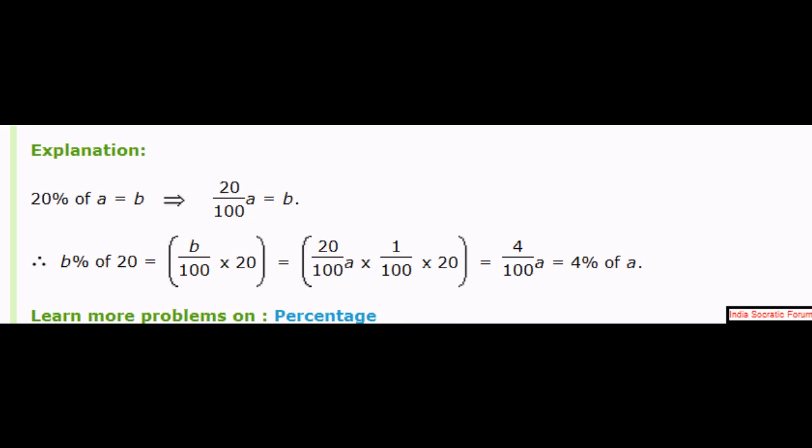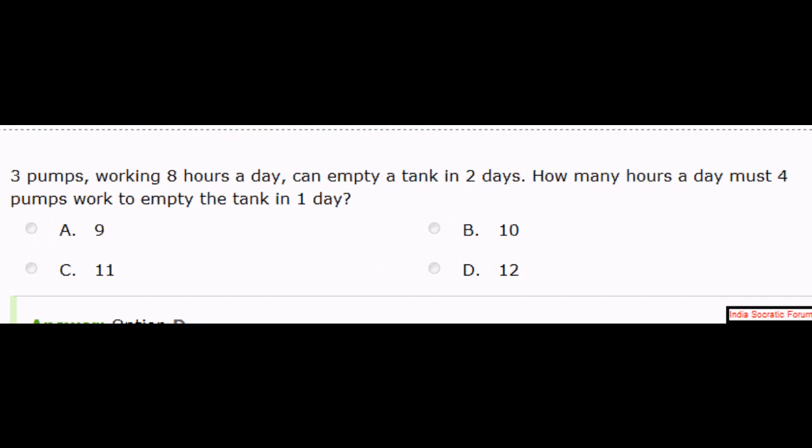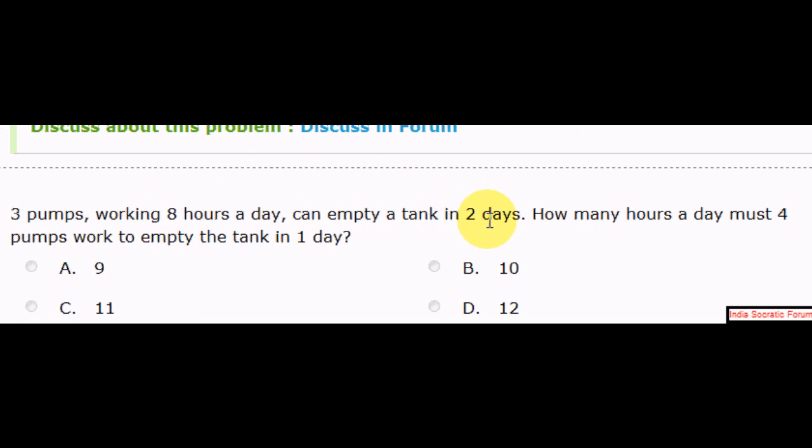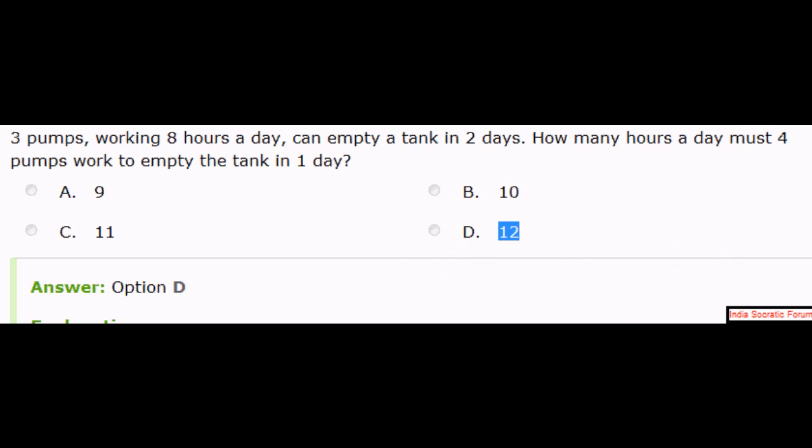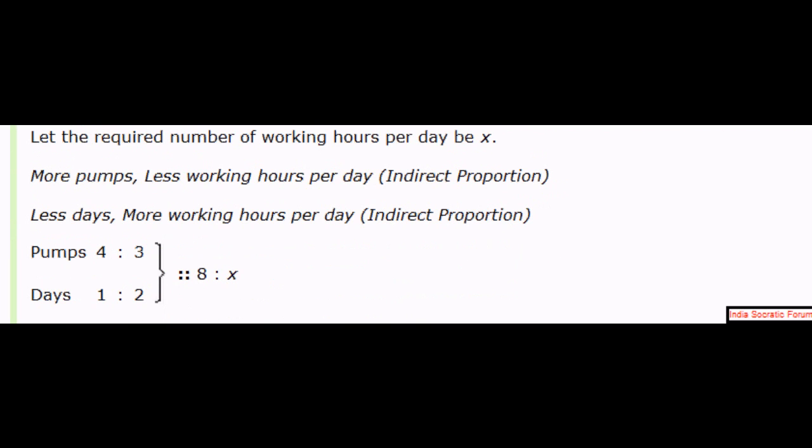Let's go to another sum here. 3 pumps working 8 hours a day can empty a tank in 2 days. How many hours a day must 4 pumps work to empty the tank in 1 day? 3 pumps in 2 days empty a tank in 8 hours in 2 days. 9, 10, 11, 12. What is the right answer? Pause the video and find it. Let me jump to the answer here. The answer is option D, 12. Why so? Simple. The required number of working hours per day be x. More pumps, less work hours per day. Right? That's indirect proportion, inversely proportional. Less days, more working hours per day. That's also inversely proportional.